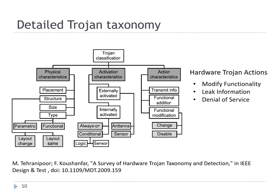This kind of attack is called hardware trojans. Hardware trojans consist mainly of three categories: physical characteristics, which show how to implement the trojan; activation characteristics, which show how to activate it — for example, using broadcast frequencies locally used in a target area; and action characteristics, which represent the behavior of hardware trojans. These behaviors can be roughly divided into three categories: modify functionality, leak information, and denial of service.